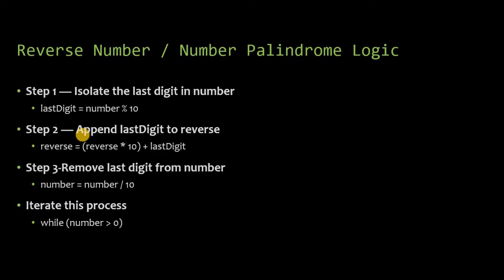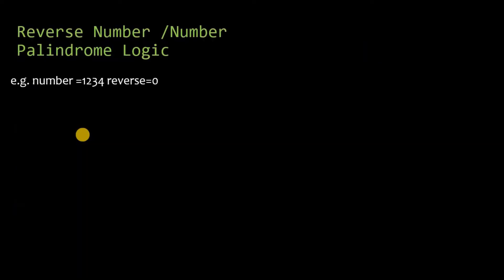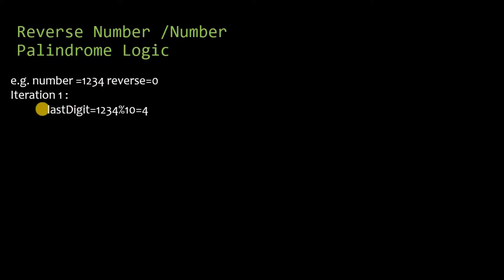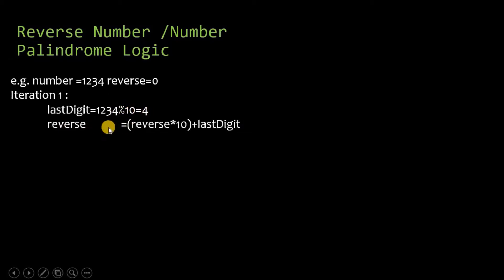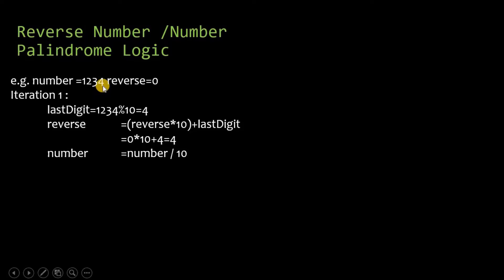Consider the number 1234. Initially we declare reverse as 0. In iteration 1, the first step is to isolate the last digit. We extract 4 by performing the mod operation: last digit equals 1234 mod 10, which equals 4. Then we append this digit to the reverse: reverse equals reverse times 10 plus last digit, which is 0 times 10 plus 4, so reverse is now 4.